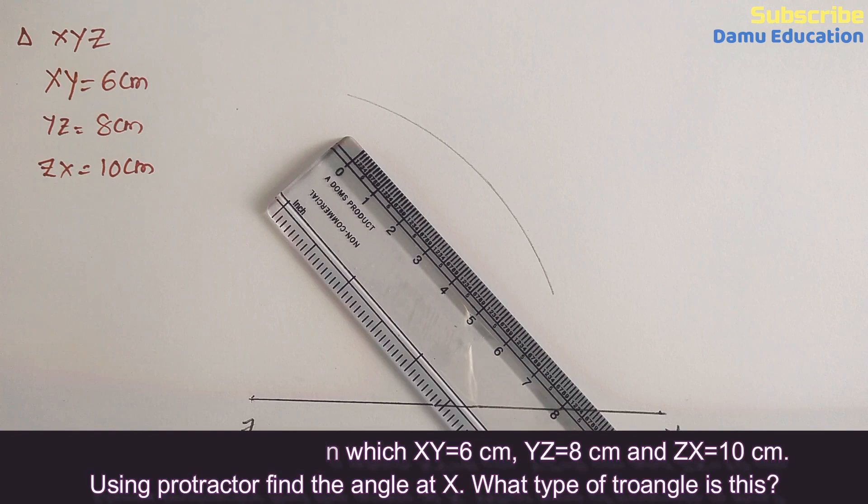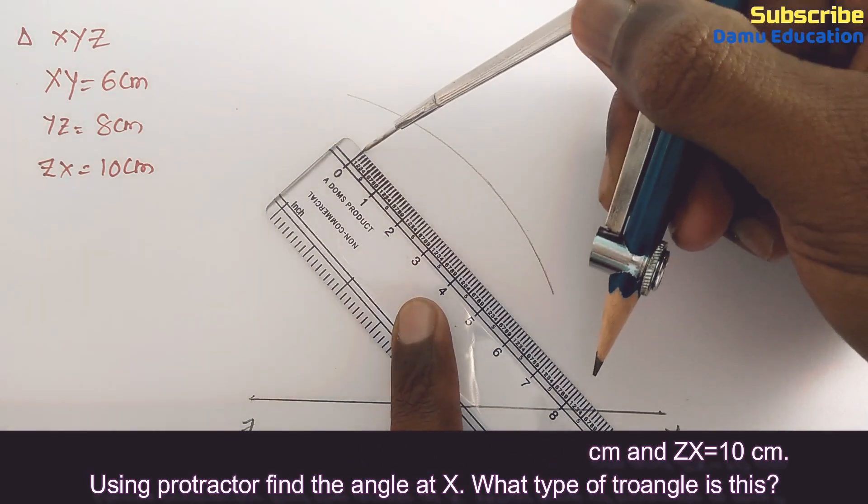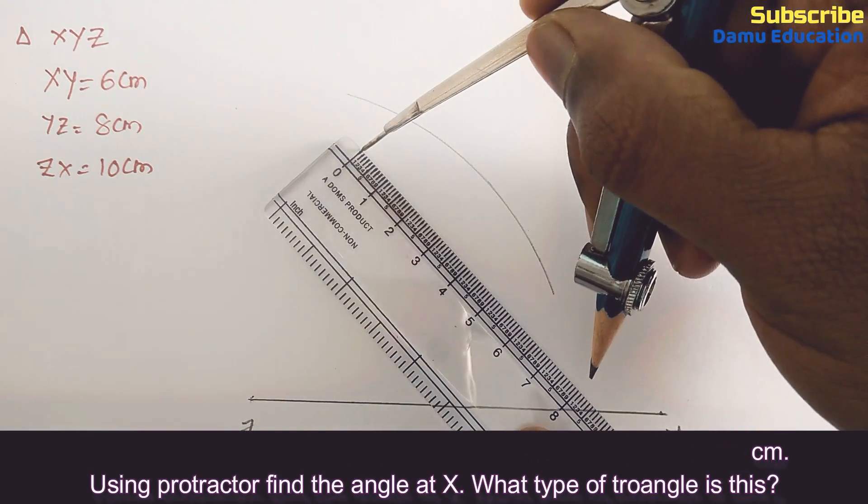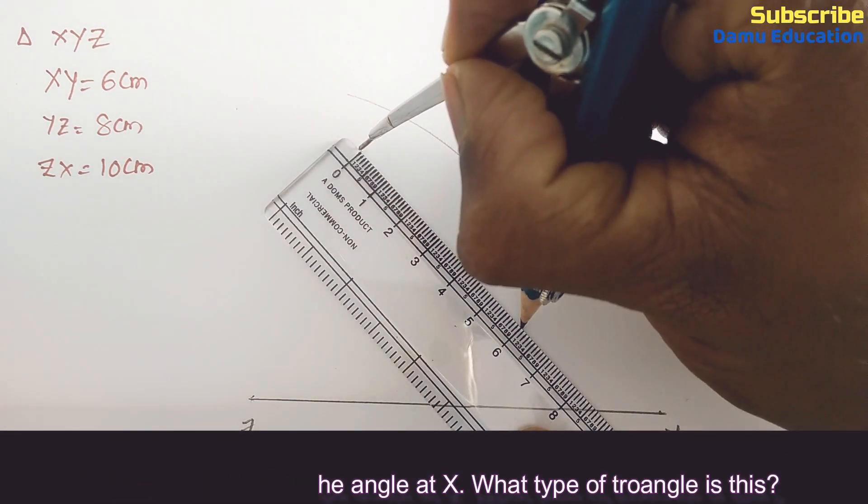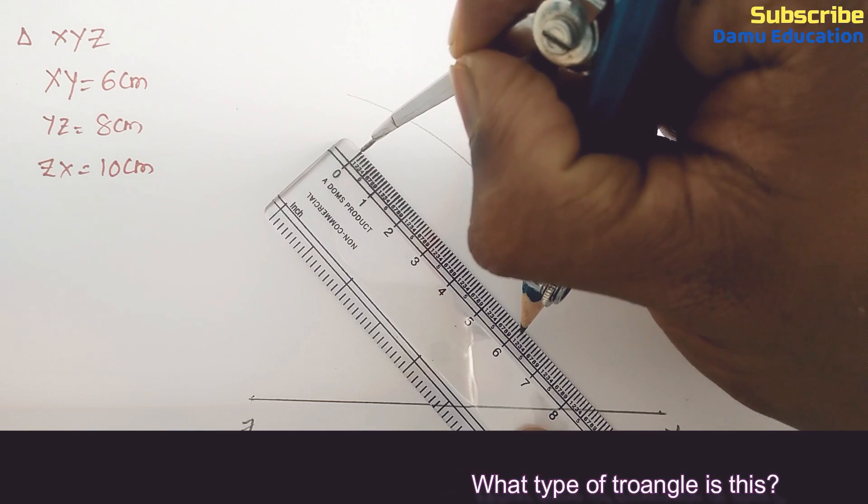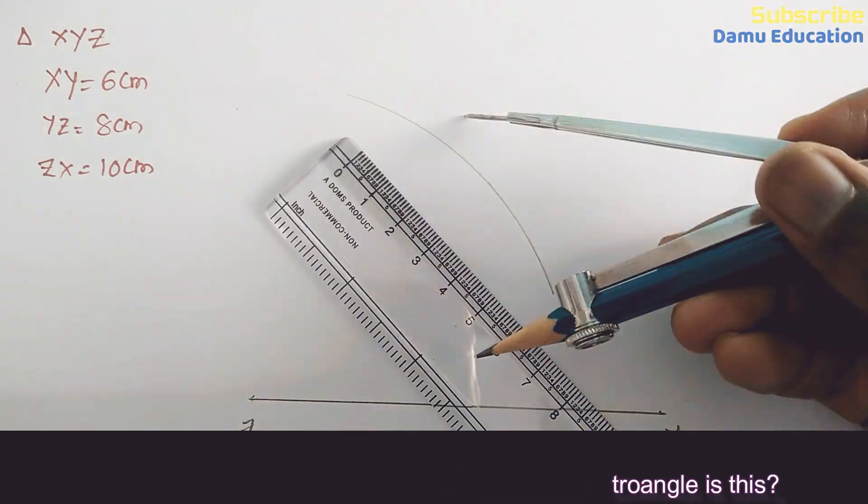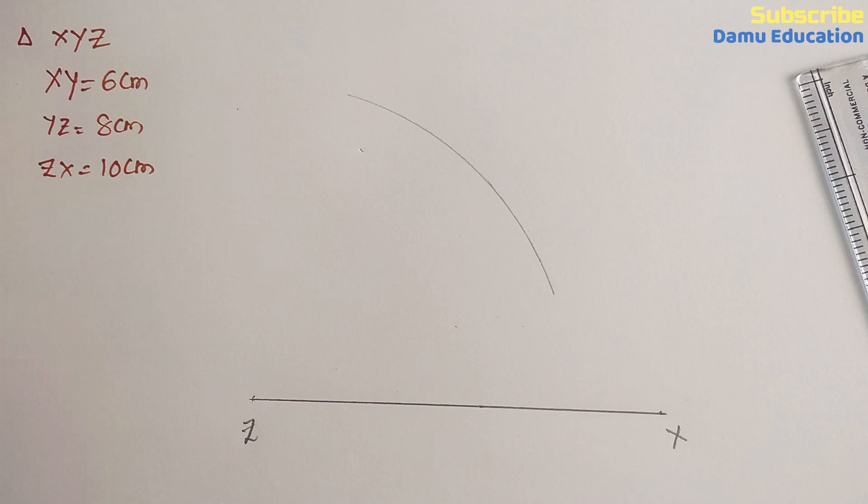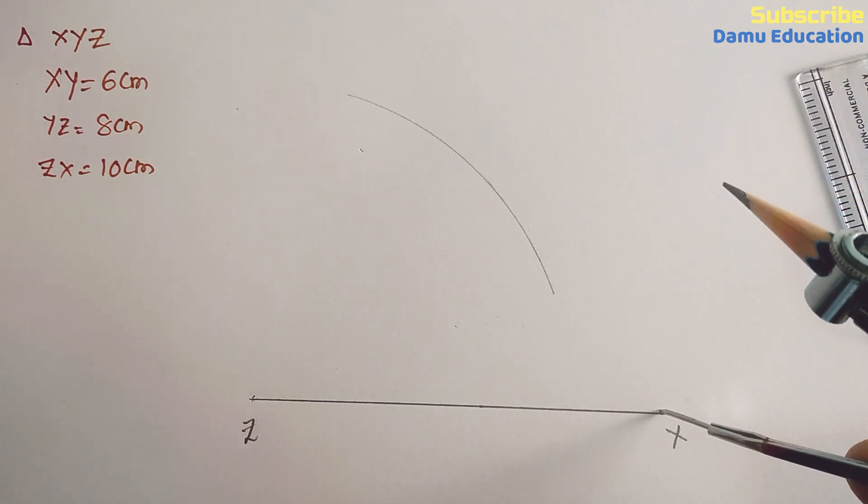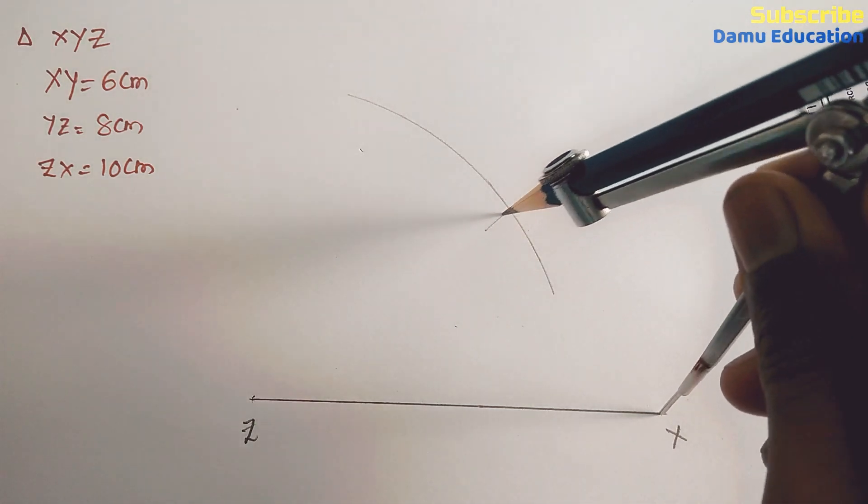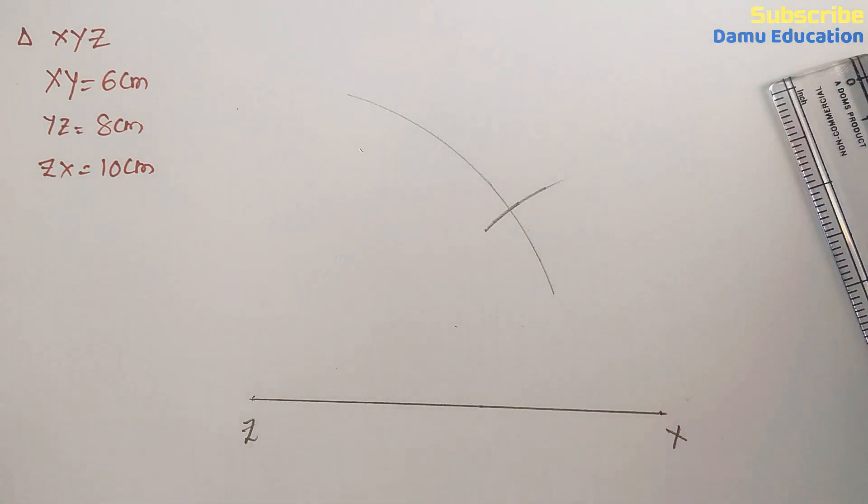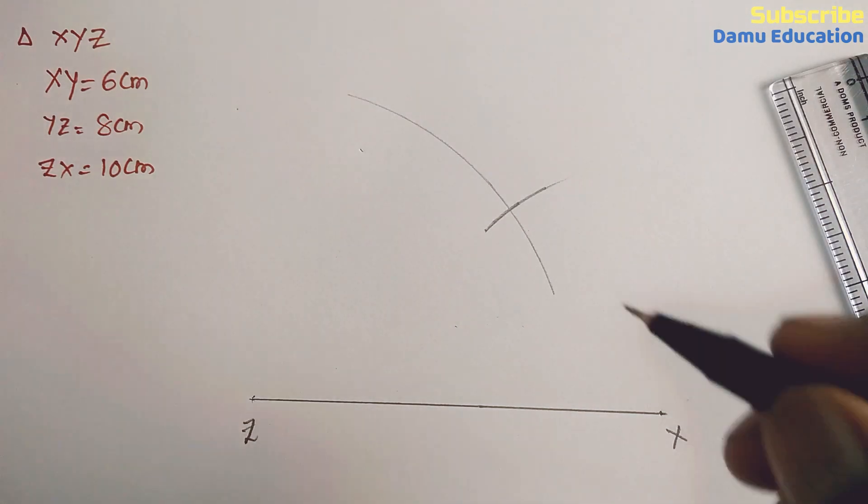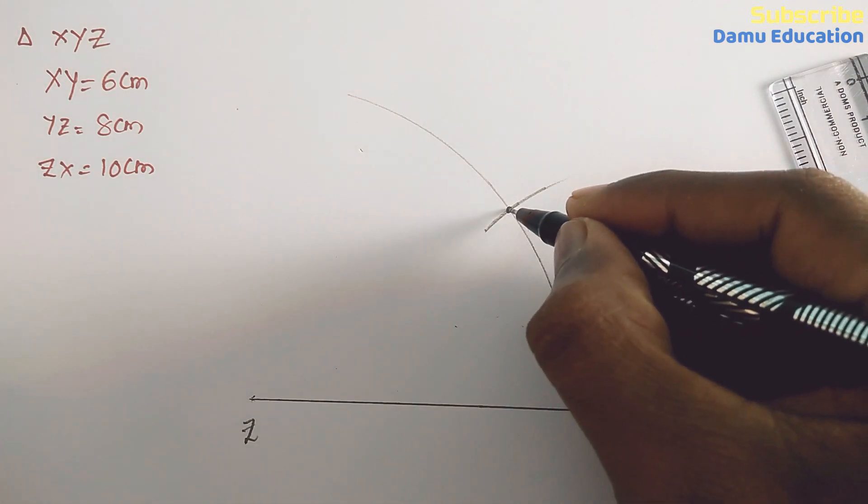Next, with XY we need to draw an arc with 6 centimeters. We need to measure like this—yes, we got 6 centimeters. This length is 6 centimeters. So with X as the center, draw an arc with radius 6 centimeters. Lightly, we need to draw the arc. Where they are meeting, that point is point Y.